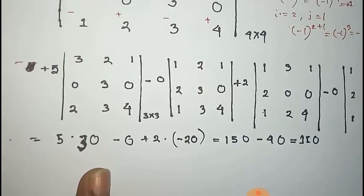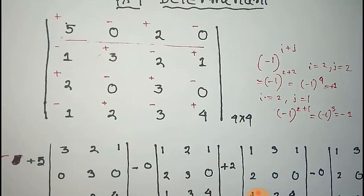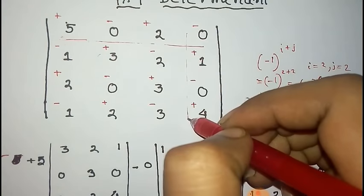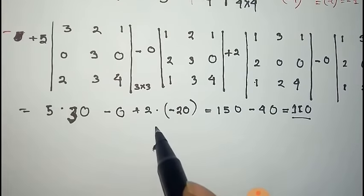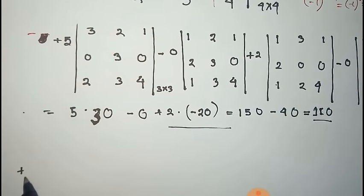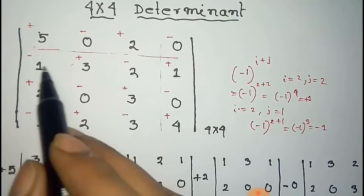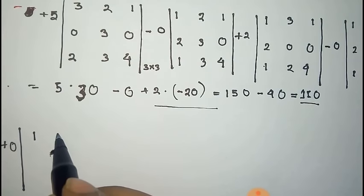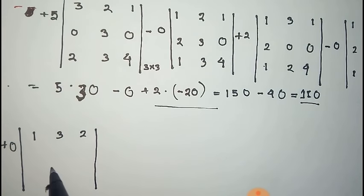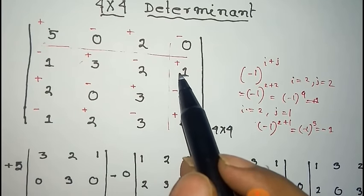We get the value of this determinant using this method. Now we show that we get the same answer if we expand with another row or another column. We expand with a different column. The first term is zero, so we write zero there and expand — cancelling the row and column of that element gives the remaining determinant: 1, 3, 2; 2, 0, 3; 1, 2, 3.